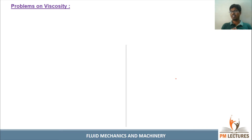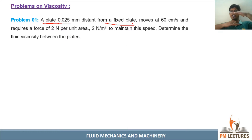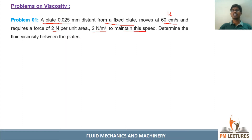Problem number one: a plate is 0.025 mm distance from the fixed plate. The moving plate moves at 60 centimeters per second. It requires a force of 2 newton per meter squared — that is, a shear stress of 2 N/m² — to maintain this speed.